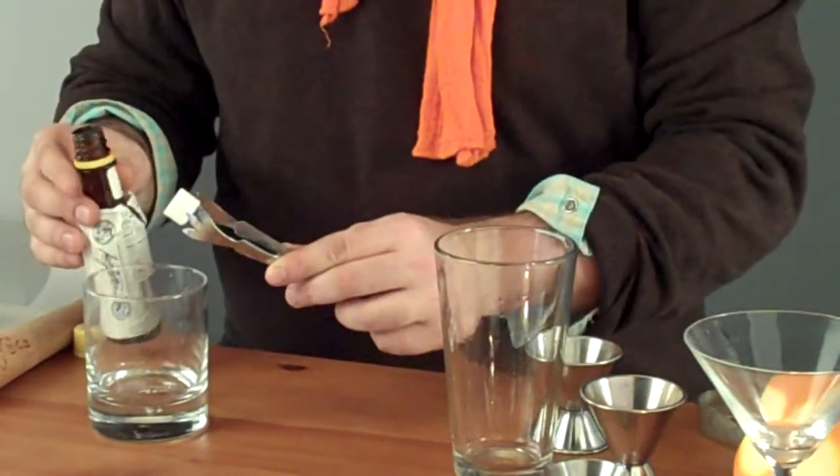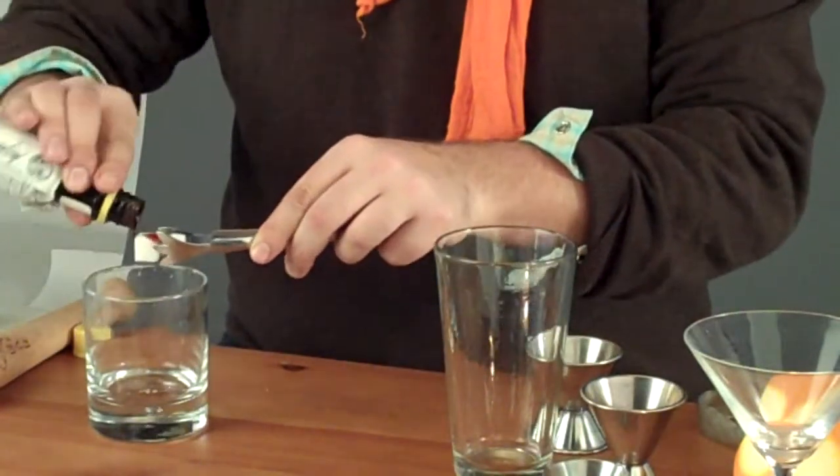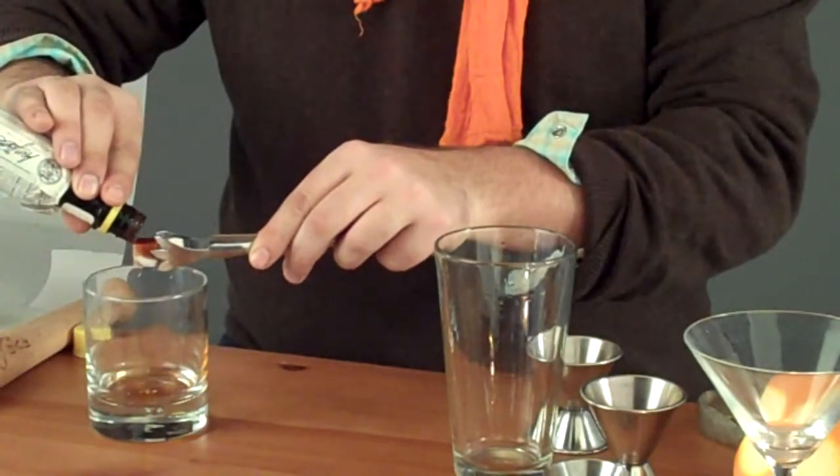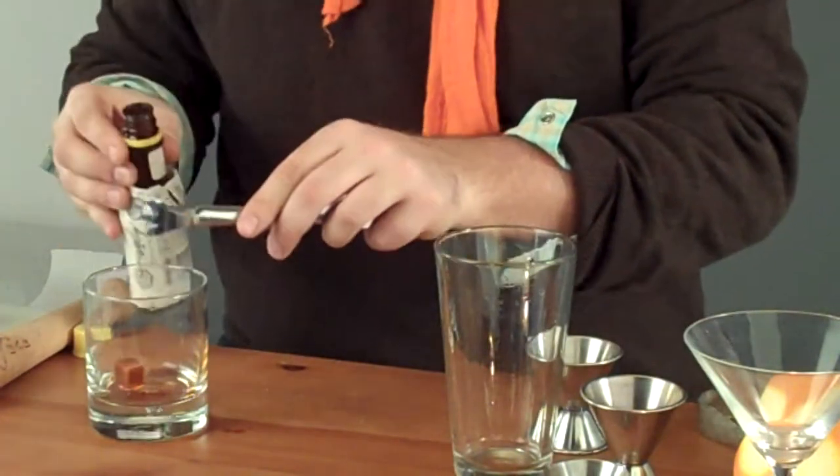Now I'm going to muddle a sugar cube for an old-fashioned whiskey cocktail. Take a sugar cube, douse it pretty good with Angostura. Drop it in.